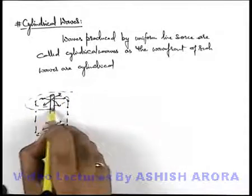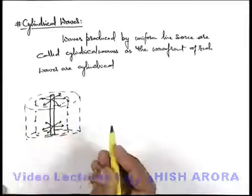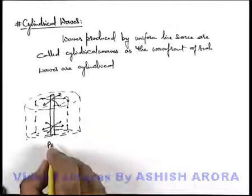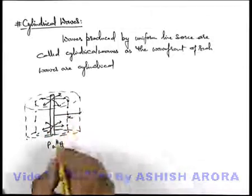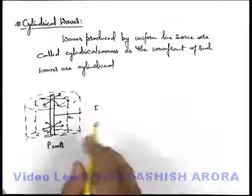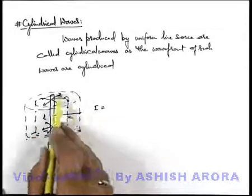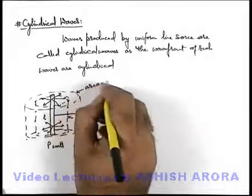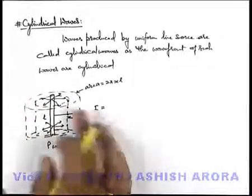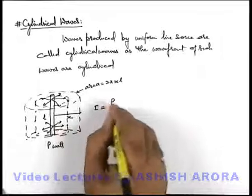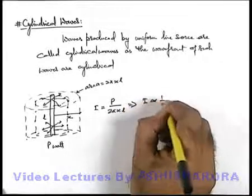The size of the cylindrical wavefront will increase with the speed of waves, so the wavefront is cylindrical. If the source is emitting waves at a power P watts, then at a distance x from the source, the intensity will be power per unit area. If the source is of length l, the area of the cylindrical surface is 2πxl, which is the lateral surface area of the cylinder. So the intensity at a distance x from the source is I = P / (2πxl), meaning intensity is inversely proportional to x.